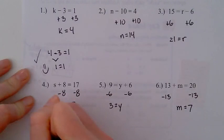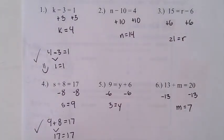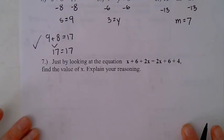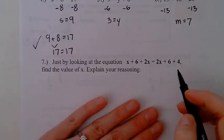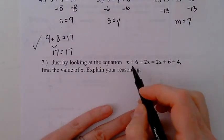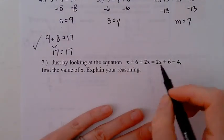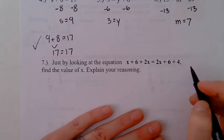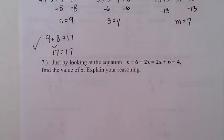So this bottom part here is a little thinking question. We have two equal expressions here: x plus 6 plus 2x equals—okay, we know they're balanced—2x plus 6 plus 4. Just by looking at the equation, what do you think x would equal? Just by looking at it, turn and tell your neighbor what do you think it is and explain your reasoning.